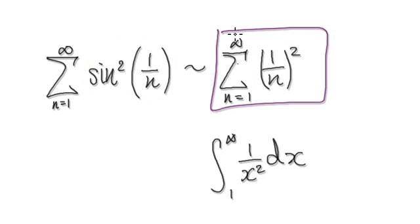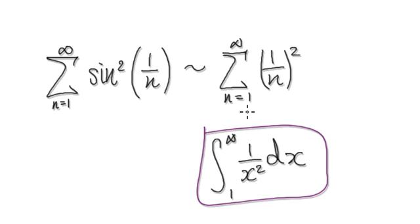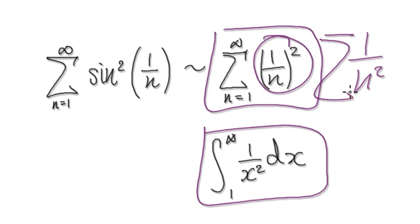The minute you see this, you should recognize that this will converge. In your mind, you would visualize the integral from 1 to infinity of 1 over x squared dx. We've done this many times. You should see that the sum of 1 over n squared converges.